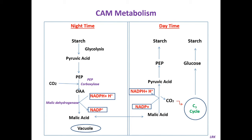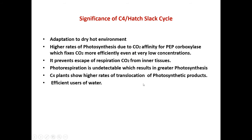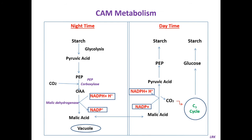In CAM plants, like C4 plants, they contain the Hatch-Slack pathway and the Calvin cycle. In C4 plants both cycles are spatially separated — the C4 cycle occurs in mesophyll cells and the C3 cycle occurs in bundle sheath cells. In CAM plants they are not spatially separated, but they are separated by time — during night time the C4 cycle takes place and during daytime the C3 cycle takes place. So in CAM plants both cycles occur in the mesophyll cells but are separated by time. This is about CAM metabolism.